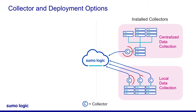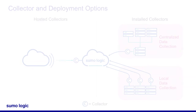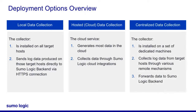Installed collectors are configured on machines in your deployment, and hosted collectors are used to collect data from various services like Amazon S3 or over HTTP. You can choose to install a small number of collectors to keep your topology simple or centralized, or install many collectors on many machines locally to distribute the bandwidth across your network. There are three types of data collectors: local, hosted or cloud, and centralized.